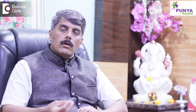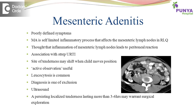Lymphadenitis or adenitis is because of either infection or a cancerous condition. The adenitis identified on ultrasound, CT, or MRI will usually be picked up when the lymph node size is beyond 1 cm. The commonest lymphadenitis we see is related to infection in the small intestine or the appendix.